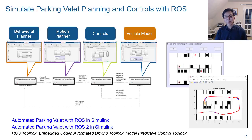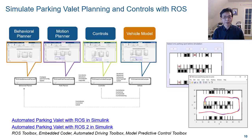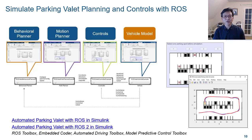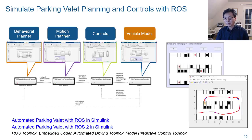Before deployment to the target, you may want to simulate the entire system to verify its performance once again. Here, we use model references for each functional module in one single Simulink model. In other words, the behavior planner, motion planner, control, and dynamics all have their individual model references.